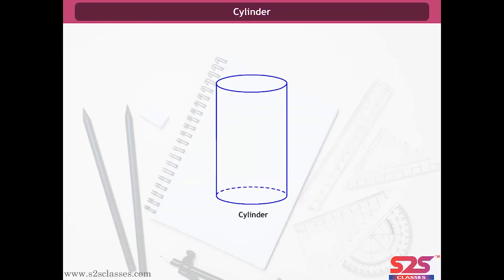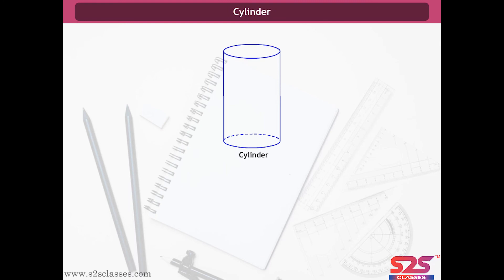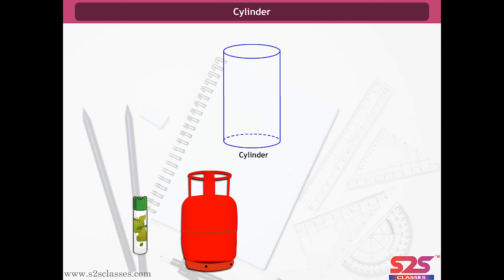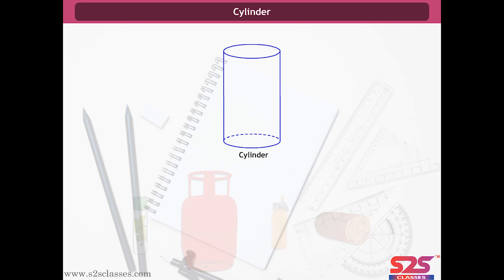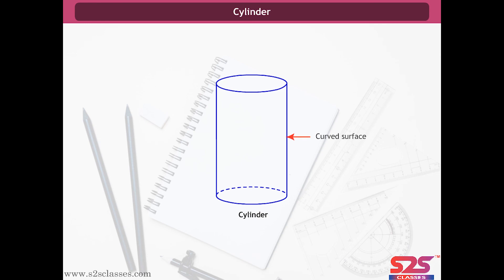Cylinder. This is a cylinder. Examples of cylindrical shapes are a deodorant bottle, a gas cylinder, a water bottle and a wooden log. A cylinder has two circular faces — one at the top and one at the bottom — and a curved surface.